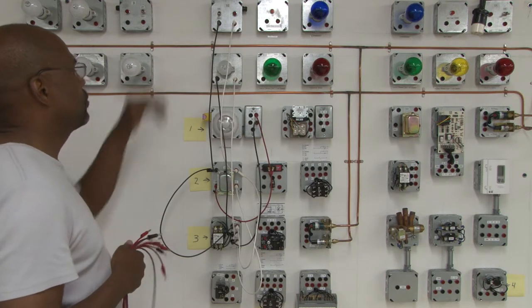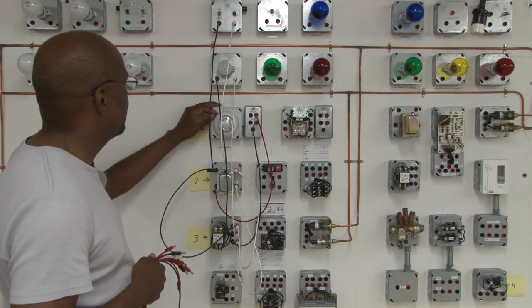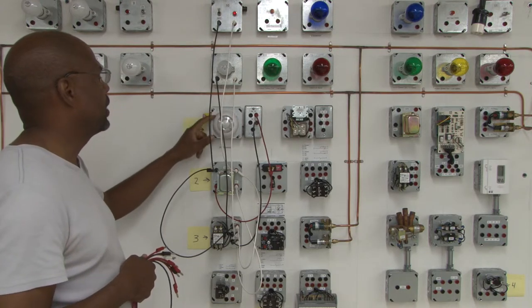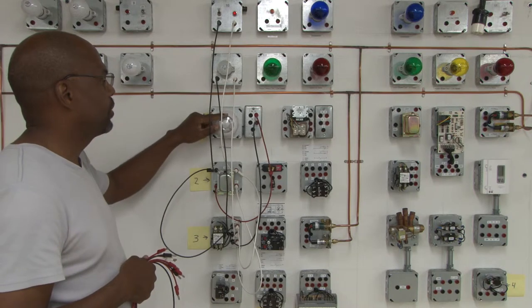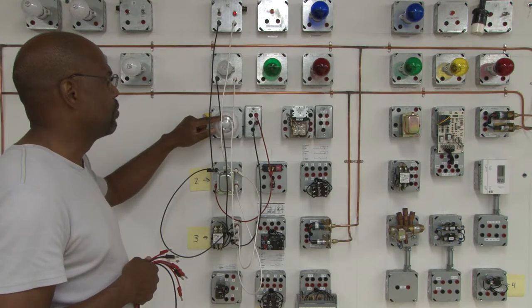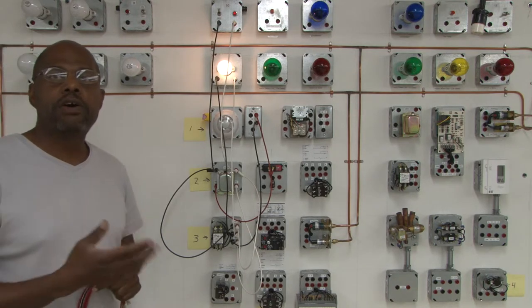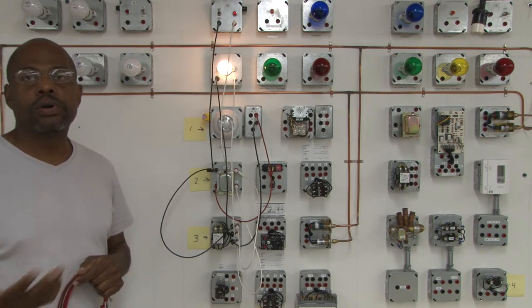So now we're going to turn the power on. First we're going to turn the power on, set the thermostat to cooling. Now we're going to turn the thermostat below the room temperature and you see that it's energized. This is how we switch electrical circuits on and off.